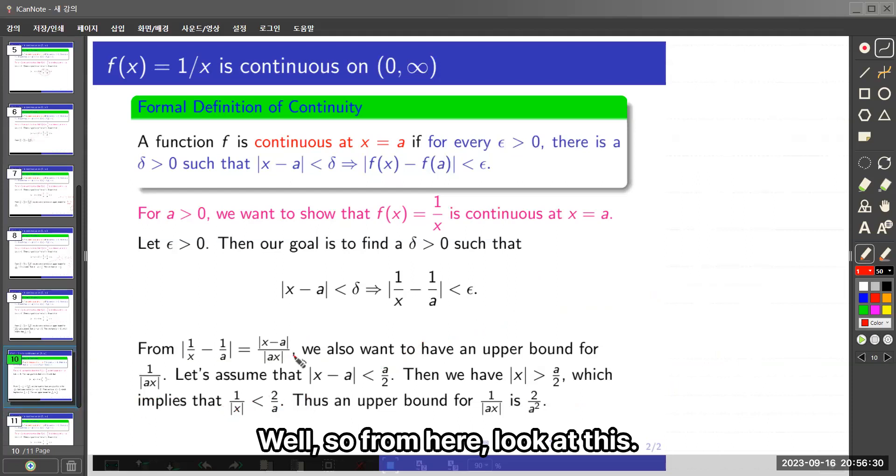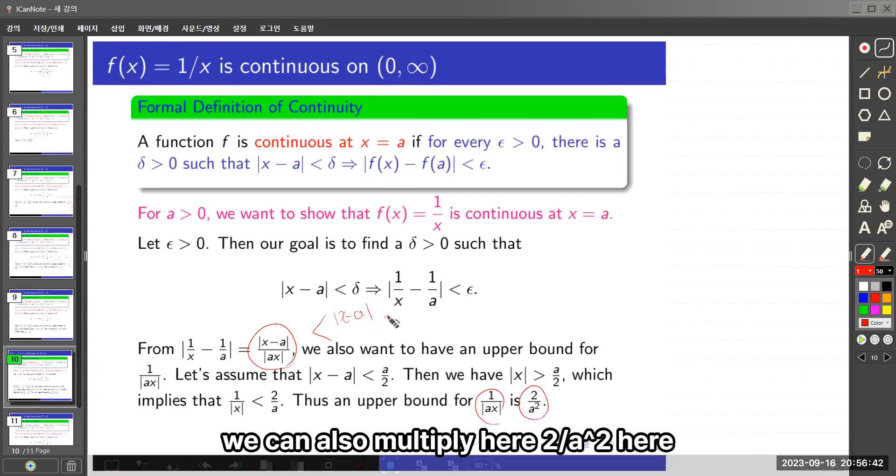So from here, look at this. This is less than |x - a|. And 1 over ax upper bound is this. So we can also multiply here 2 over a² in here.